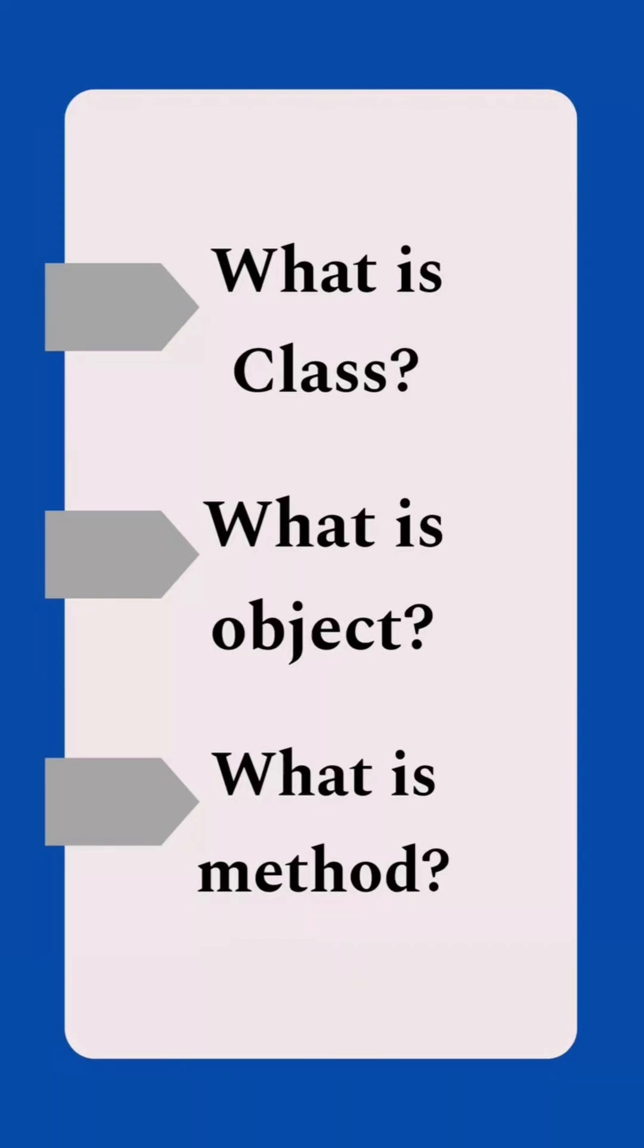What is class, object, and method, with example in C#.